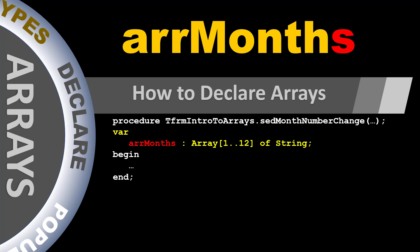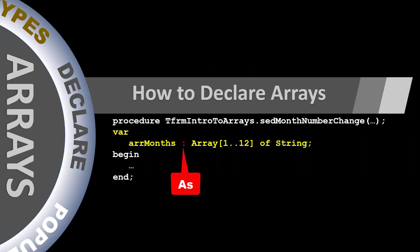The name is followed by a colon, which means 'as', then the word array, then square brackets where you define the size of the array — how many data items of the same type you want to store. For 12 months in a year you specify 1 to 12, separated by two dots, then followed by the data type. For example, month names are strings, so this array stores 12 values from 1 to 12 of type string. All 12 values in the array must be strings — you can't mix strings, integers, booleans, dates, and so on in one array.